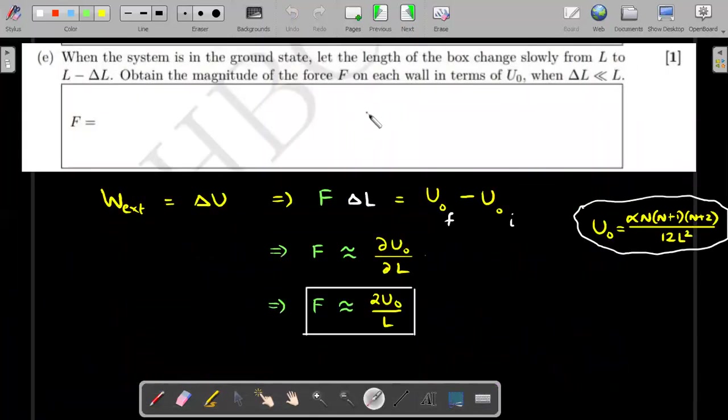For the E part, things become simpler. When the system is in ground state, let the length of the box slowly change from L to L minus delta L. Imagine the box is being compressed by someone by very small amount. Obviously energy states will change. Obtain the magnitude of the force on each wall in terms of U_0 when delta L is very small compared to L. I think this is a very standard way of finding force from energy. Remember, any of our conservative forces, we calculate by changing the value of U by small amount, and then get the value of F using work energy theorem.